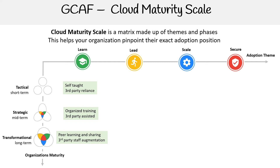The idea is that if you are in the Learn theme and in the short-term Tactical phase, you're probably going to be self-taught. If you're Strategic, you're going to have organized training, because you are bringing people and processes in as described in the maturity phases. For Transformational, we have peer learning and sharing because you're now established in the cloud and just trying to collect data and make things better.